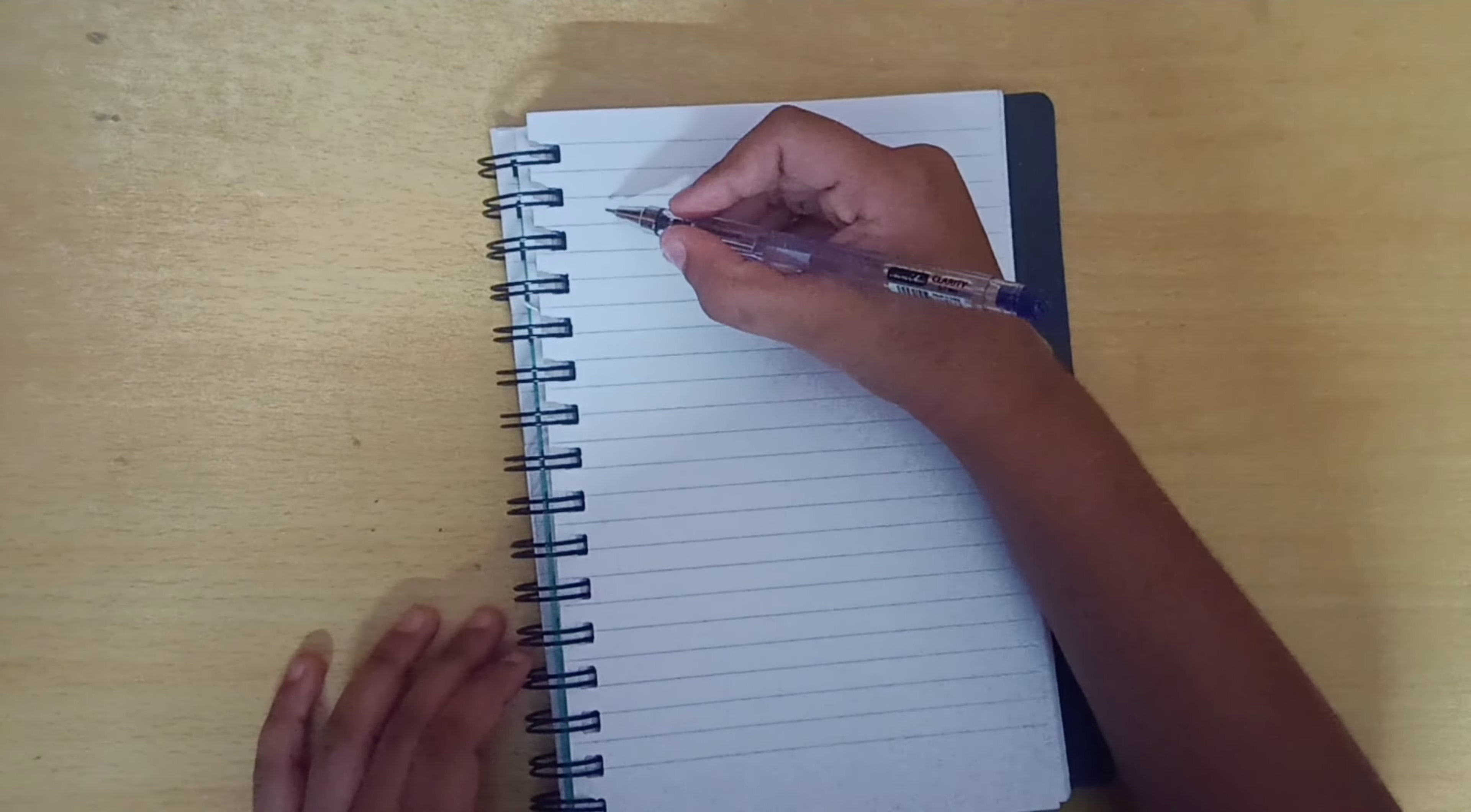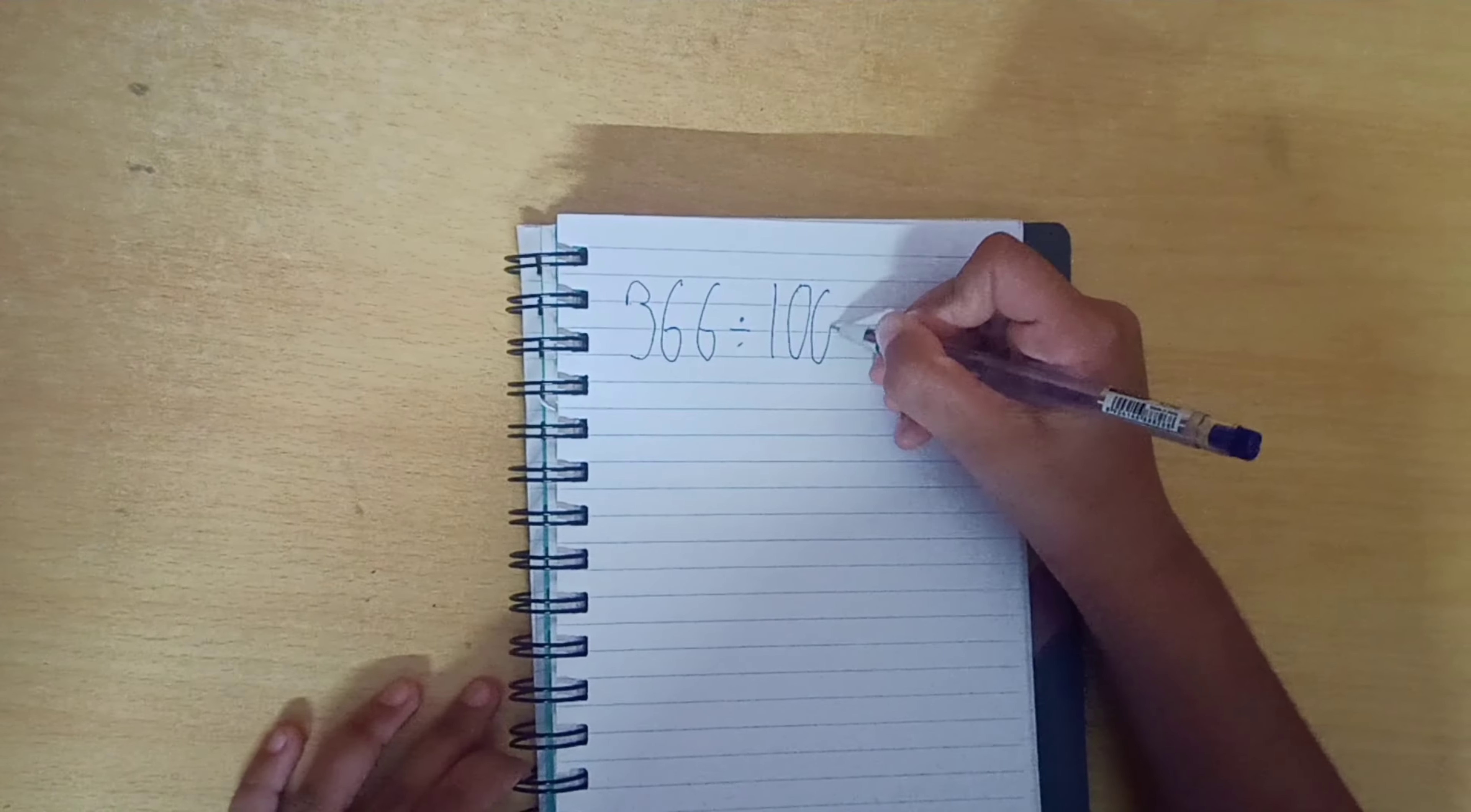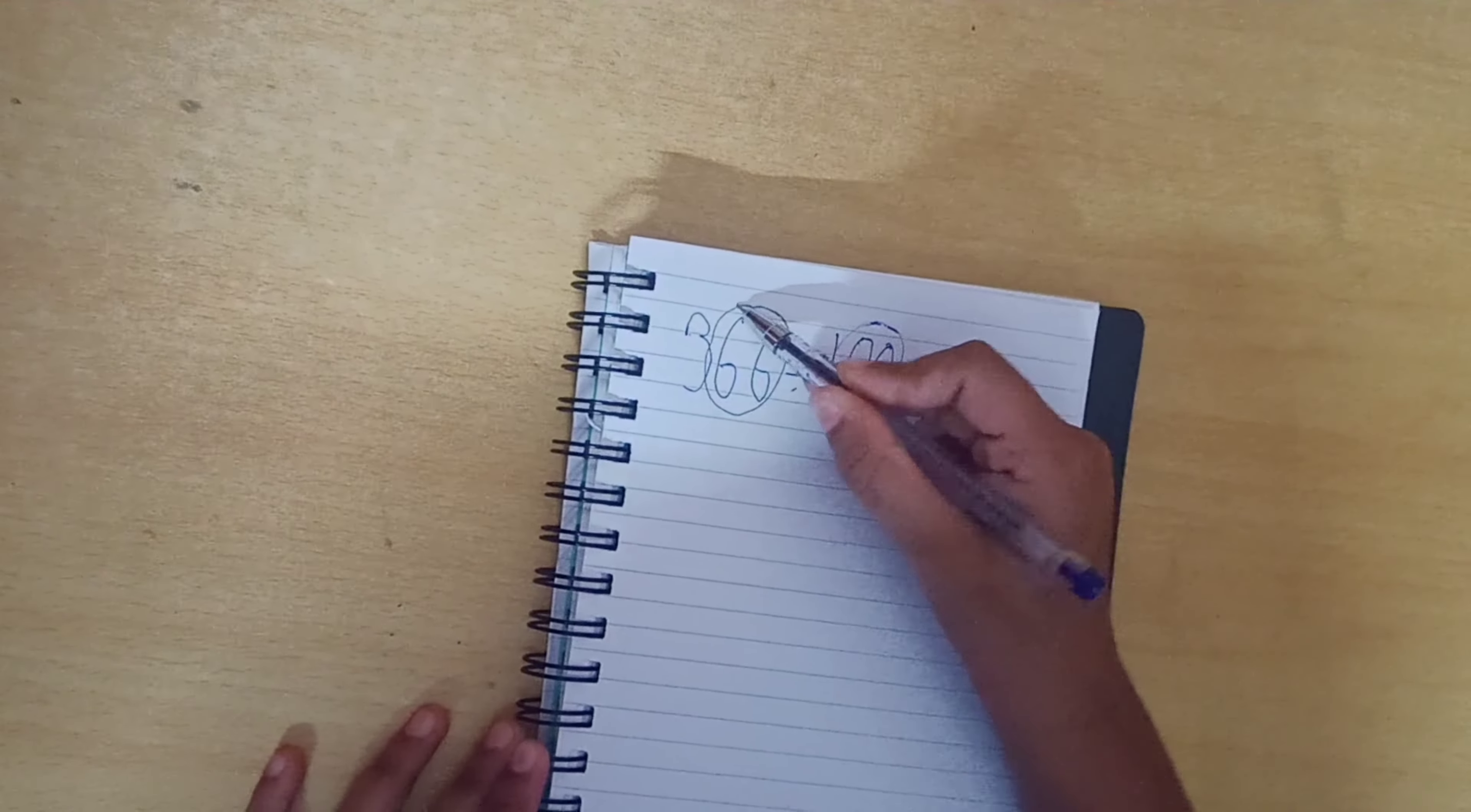Children, the next is 366 divided by 100. Children, what will be the answer? Let's check. There are two zeros in the 100. So, here these two numbers will be the remainder.